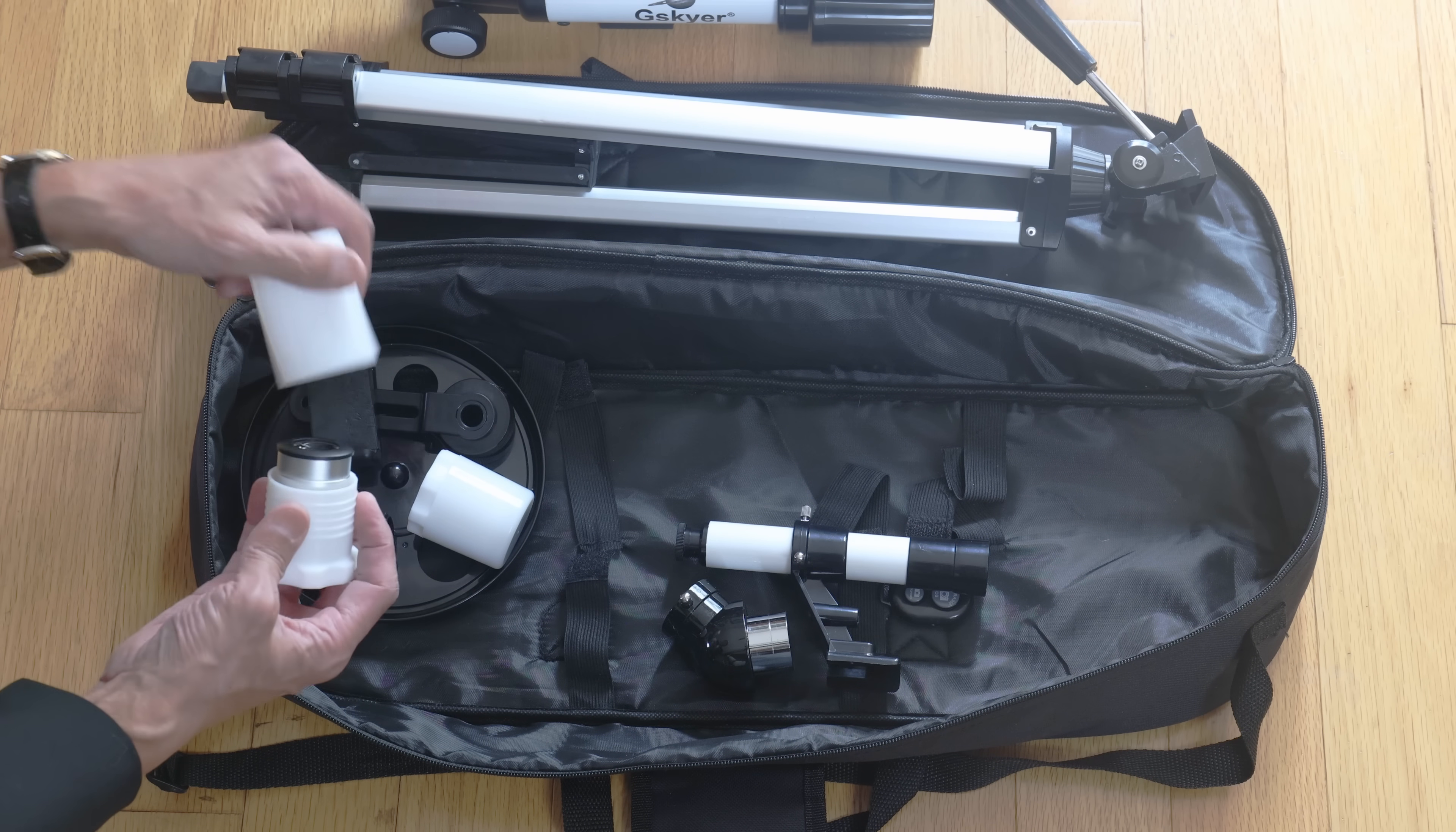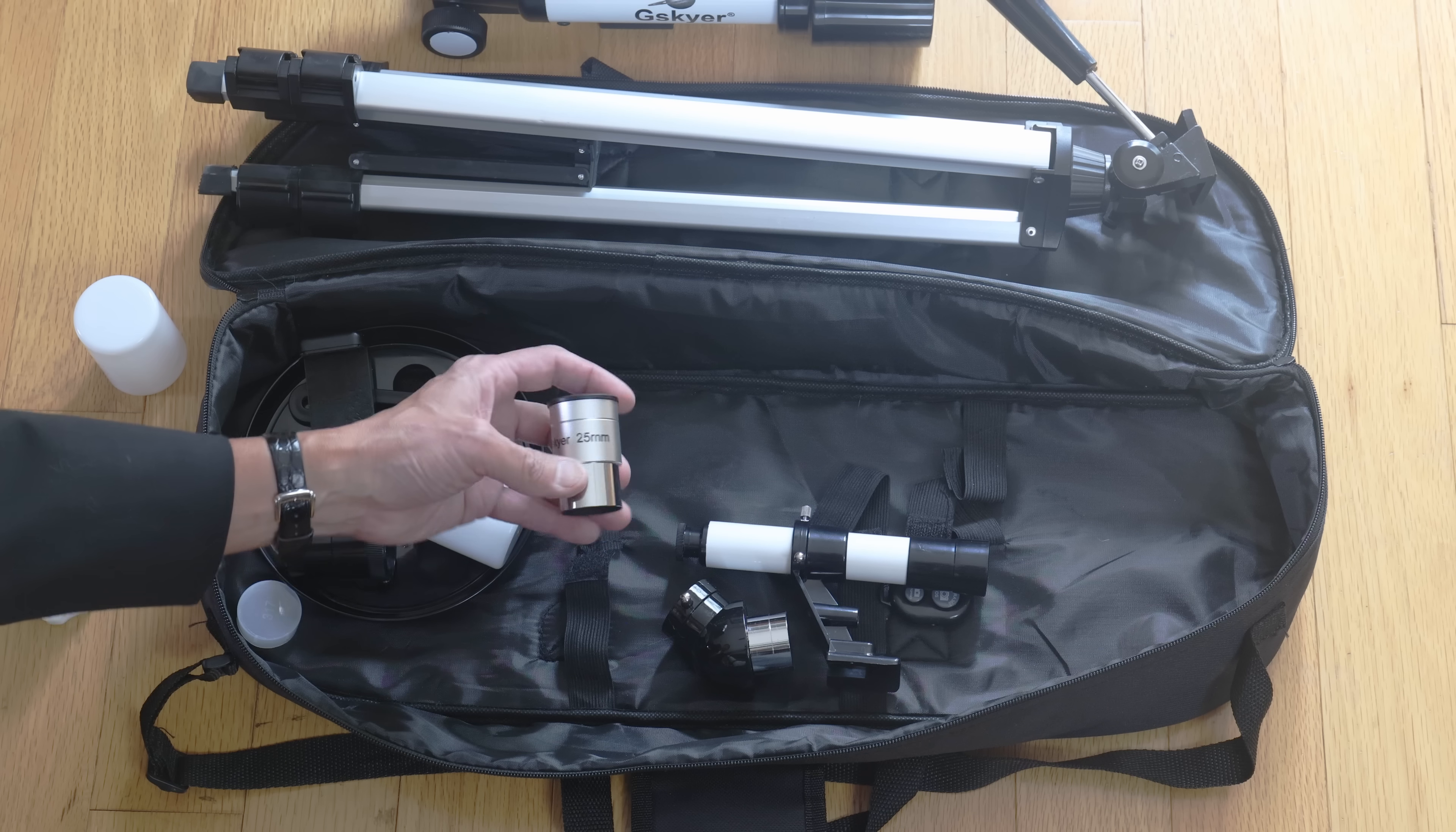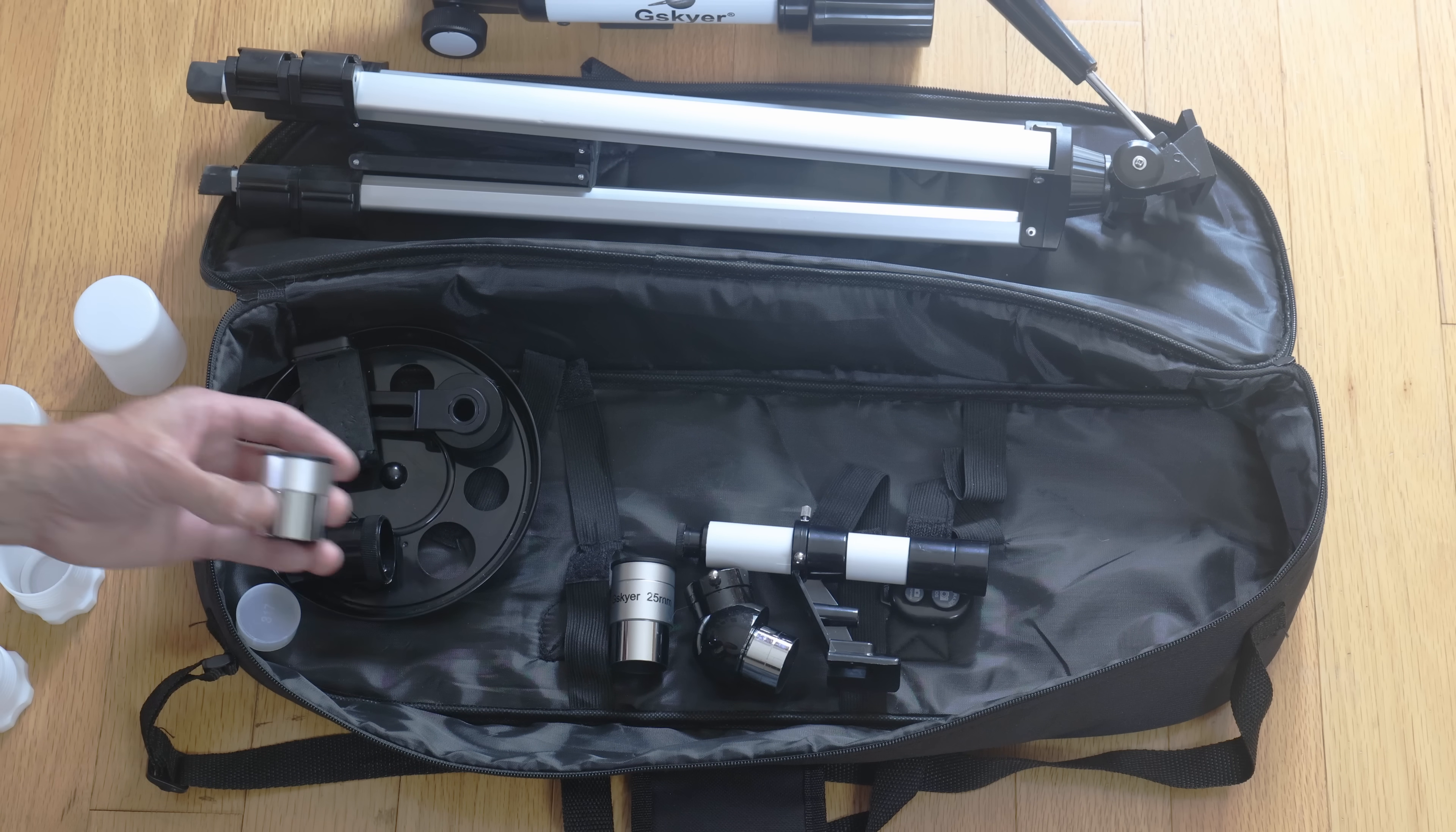We have two eyepieces. And here's a pleasant surprise. This eyepiece, quite nice. Nice. I like that. It's almost as if this walked in from another telescope. That's something you can salvage if you decide to move on. That's the 25 millimeter low power eyepiece. That's the one you're going to be using the most often.